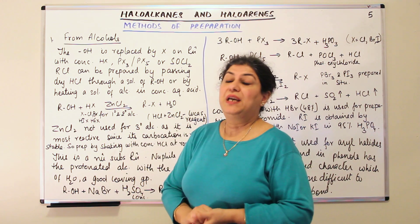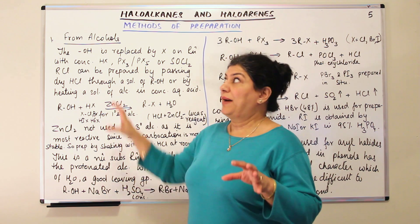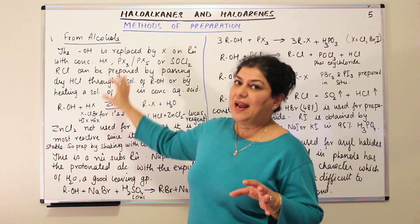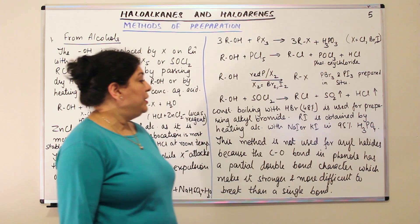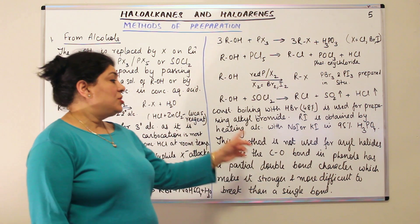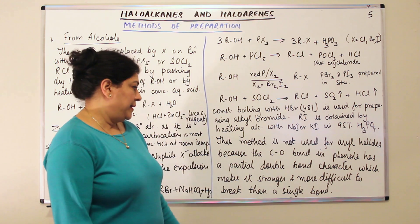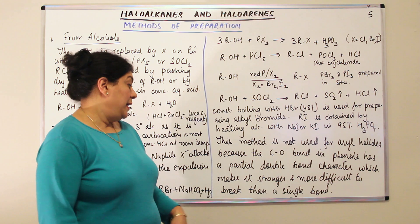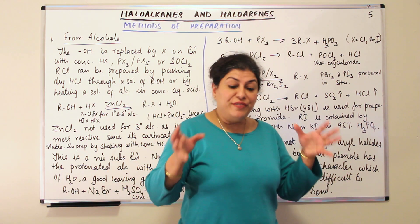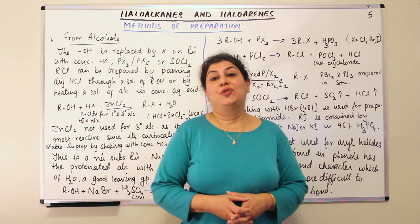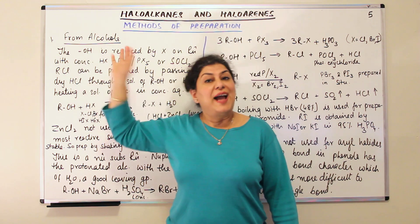It's a stronger friendship which cannot be broken. Therefore, the substitution by the halogen, in this case by these methods that is from alcohols, is not possible. So, this method cannot be used for aryl halides because the CO bond in phenols has a partial double bond character which makes it stronger and more difficult to break than a single bond. So, this was the first method of preparation of haloalkanes and that is the method of the preparation of haloalkanes from alcohols.